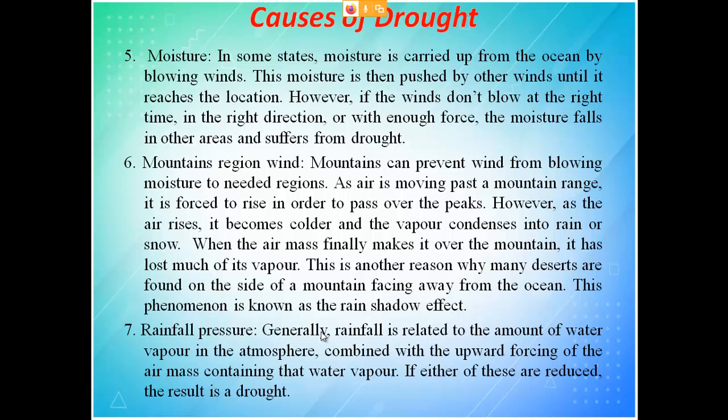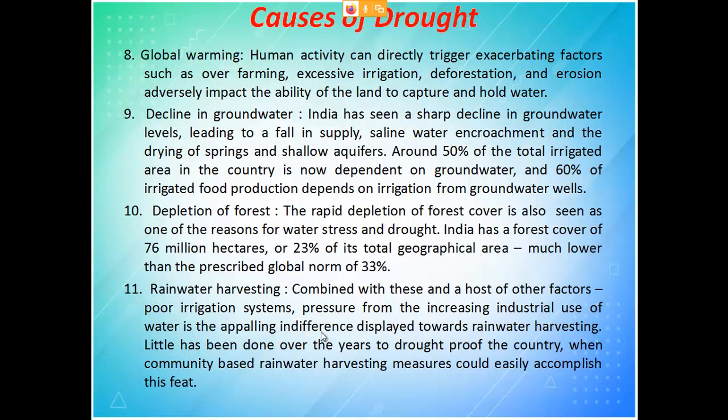Rainfall requires both adequate water vapor in the atmosphere and an upward forcing of the air mass. If either is reduced, rainfall decreases. Global warming is another factor. Decline of groundwater happens due to over-utilization — in areas with less rainfall, industries should not extract excessive groundwater since it cannot be replenished. If rainfall continuously refills the groundwater, extraction is fine, but continuous draining without refill causes groundwater decline. Deforestation also reduces rainfall. Rainwater harvesting — collecting rainwater and allowing it to percolate into the ground — is an important mitigation measure.